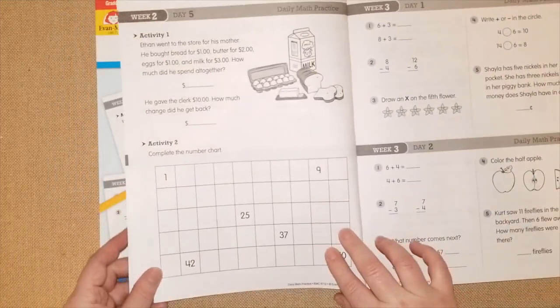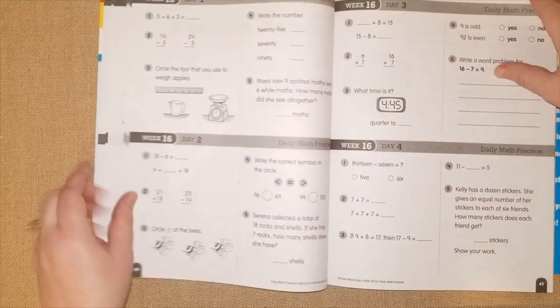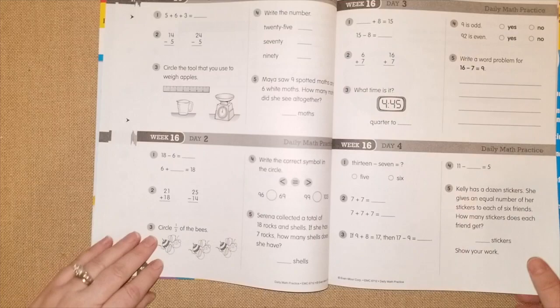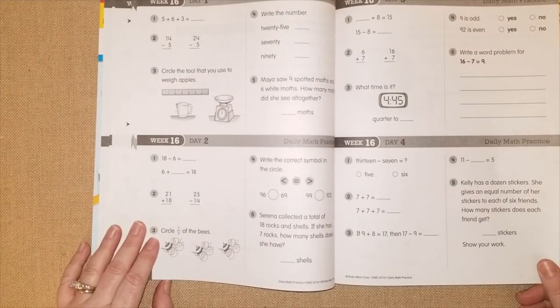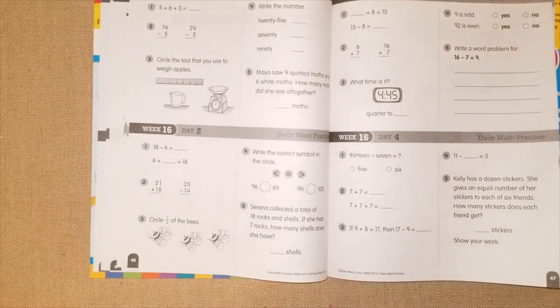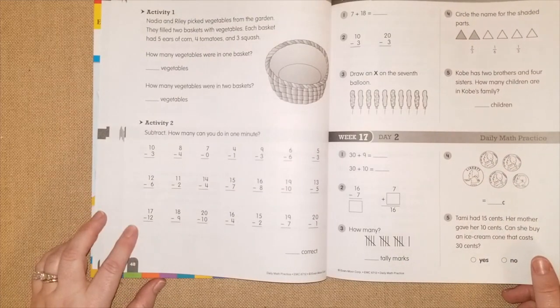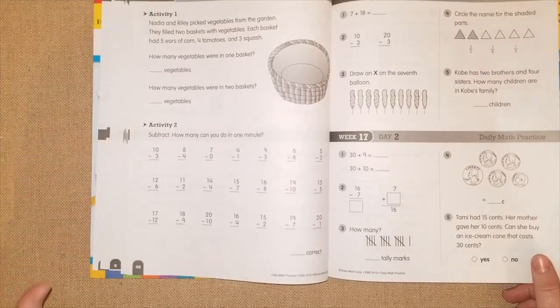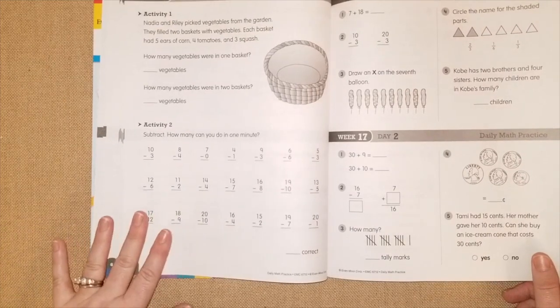And on week two they're also doing an activity for the fifth day as well. So I'm going to go into the middle, so let's go to week 16. This is day one, they're doing double digit subtraction, measuring, problem solving and fractions, comparing and time. And then the fifth day they're doing an activity. And then on activity two they're doing like a little drill, subtracting, how many can you do in one minute. So you can time them or you don't have to time them, it's totally up to you.